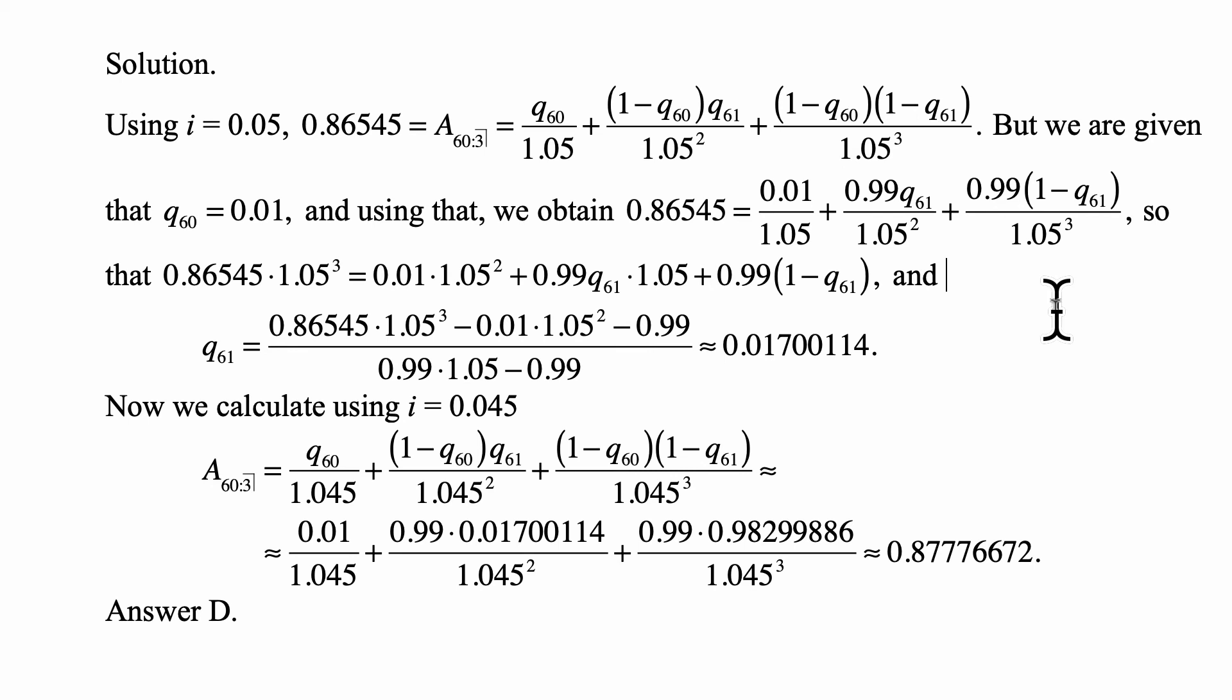plus (1 minus Q60) times Q61 over 1.045 squared, plus (1 minus Q60) times (1 minus Q61) over 1.045 cubed.